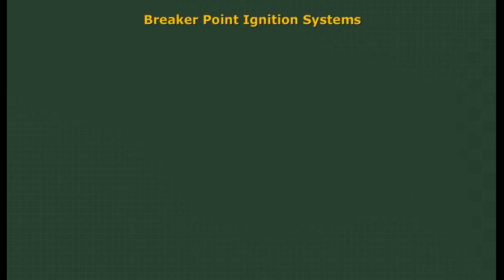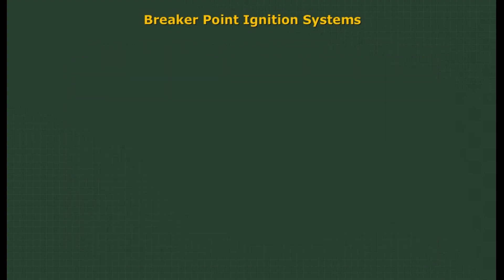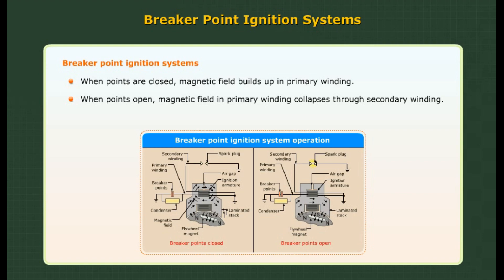Breaker point ignition system: Used on engines until 1981, consisting of an armature, points, and condenser. When points are closed, the magnetic field builds up in the primary winding. When points open, the magnetic field in the primary winding collapses through the secondary winding. This creates enough voltage to fire the spark plug.